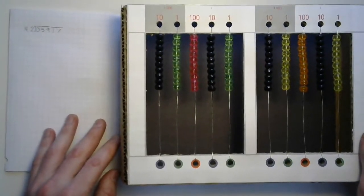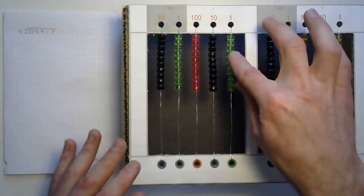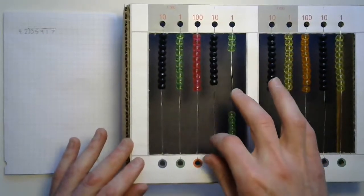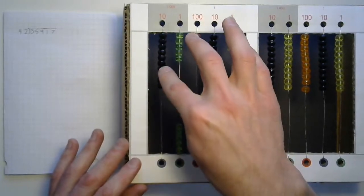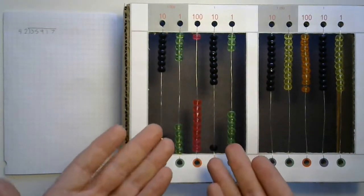On our bead frame, let's get our dividend set up. Seven units, one ten, nine hundreds, five thousands, and three ten thousands. There it is.